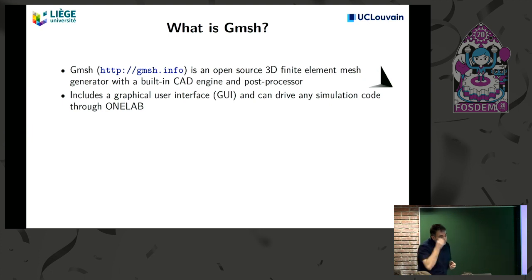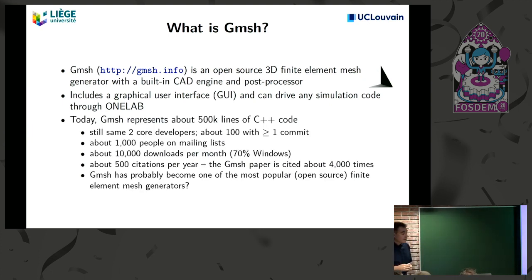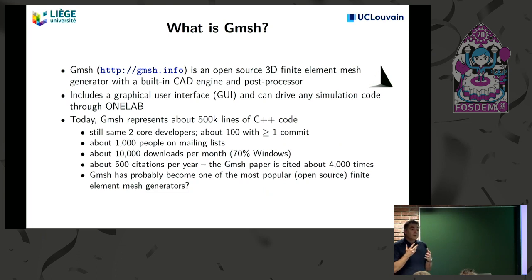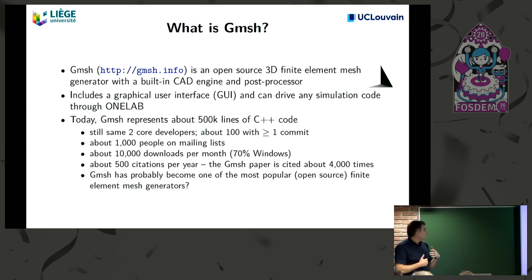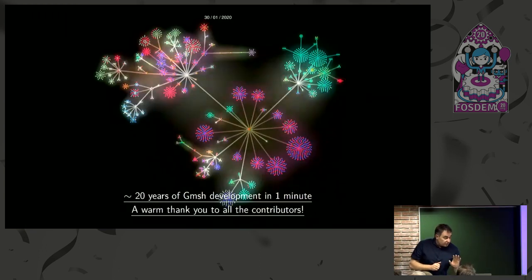In terms of size, it's not a small project and not a large project — somewhere in the middle. It's half a million lines of C++ code. The kernel is still developed by two people only: Jean-François from the University of Louvain and myself. We have about a hundred significant contributors in external modules, a mailing list, around 10,000 downloads per month, and quite a lot of academic citations. It has become one of the go-to open source solutions for finite element meshing.